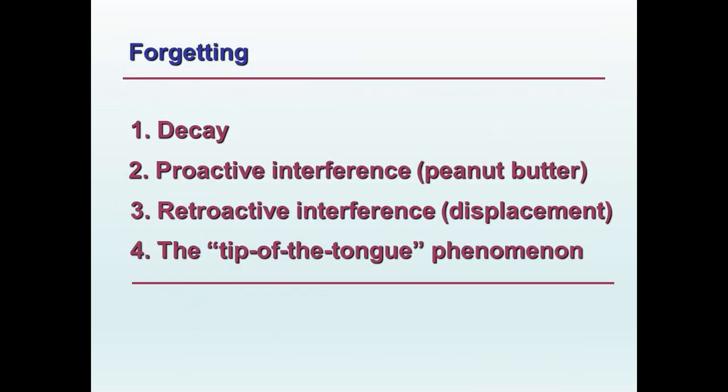Now let's talk about forgetting. Memory decay can occur at the level of sensory memory, short-term memory, or long-term memory. If something goes wrong anywhere within the three storage model, forgetting will occur. There can also be interference with memory — something that occurs before an event could cause you to forget the event, or something that occurs after the event could cause you to forget it. The two terms associated with these circumstances are proactive interference and retroactive interference.